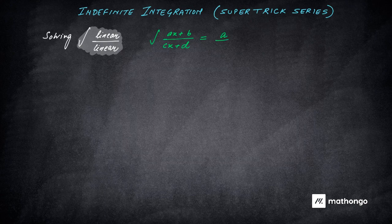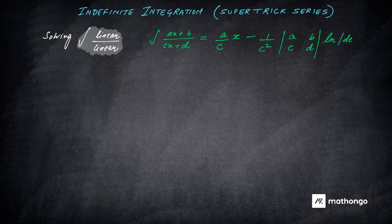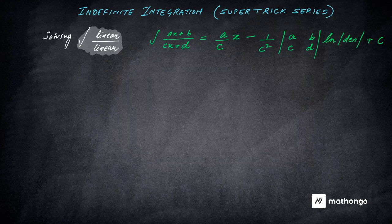The answer is simple: divide the coefficients of x, that is a by c, put x in front of it. Then with a minus sign, put 1 by c squared — where c is the coefficient of x in the denominator — then put a determinant with coefficients a, b, c, d as they are. The remaining part is nothing but ln mod of the denominator expression.